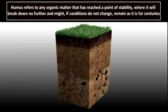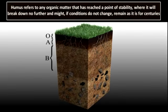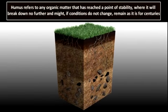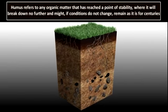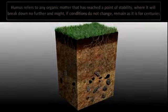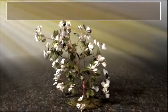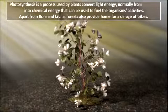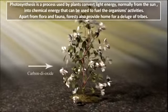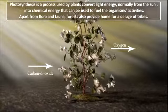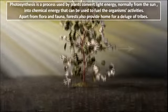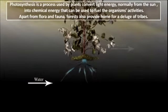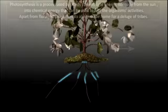Microorganisms eat the dead plant and animal tissues and convert them into a dark-colored substance called humus. Plants release oxygen through the process of photosynthesis to provide oxygen for animal respiration.